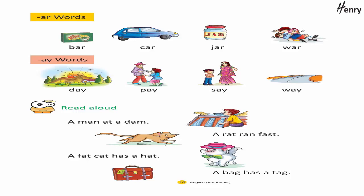Read aloud: A man at a dam. A rat ran fast. A fat cat has a hat. A bag has a tag.